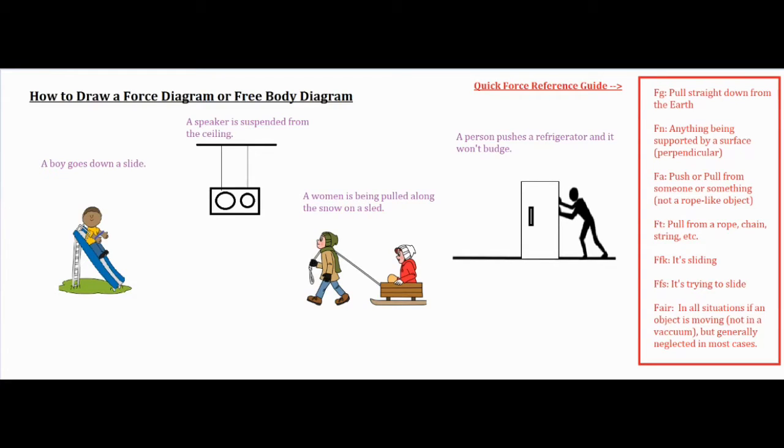We're going to start off with the very first one, and we're just going to go down the list slowly for our first diagram, then for the next three, we'll probably go through a little bit more quickly. For our first picture, we have a boy going down a slide. We're going to start at the top of our list. Fg, a pull straight down from the earth. That is definitely present. Fg is in all of our different diagrams.